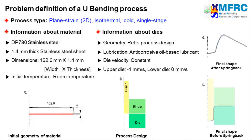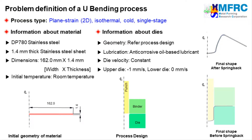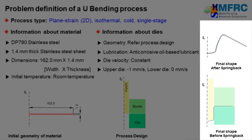Anti-corrosive oil-based lubricant is used as a lubricant in this forging process. Therefore a corresponding friction formulation will be selected. A constant velocity condition will be used in this simulation because the material is rate independent. The spring back phenomenon will also be simulated in this tutorial. The problem definition is complete. The result of the simulation would be a U-shaped sheet as can be seen on the right side. The final shape of the sheet after spring back can also be seen here.